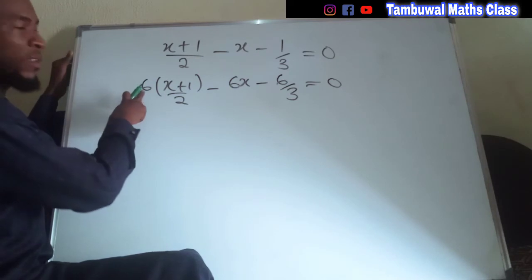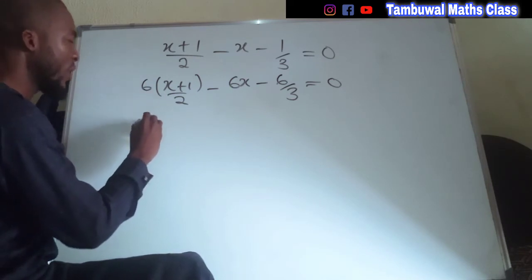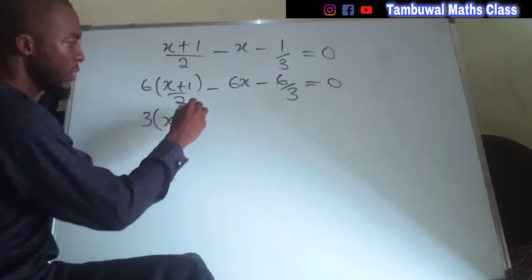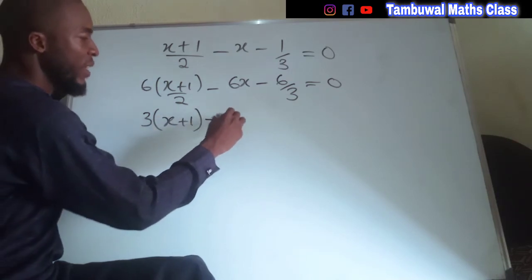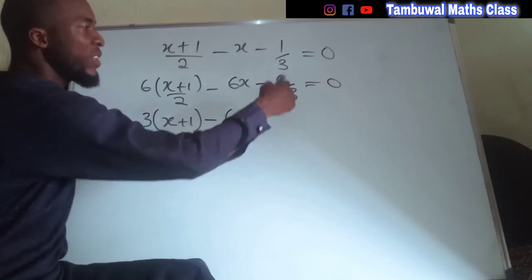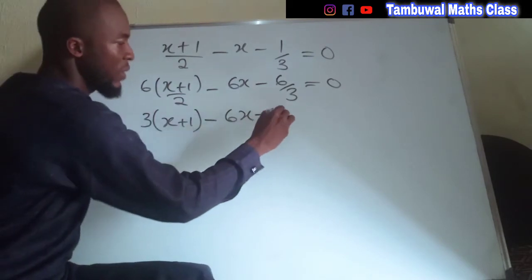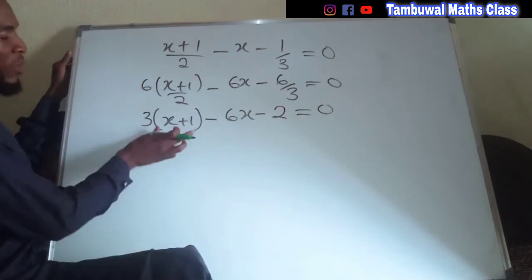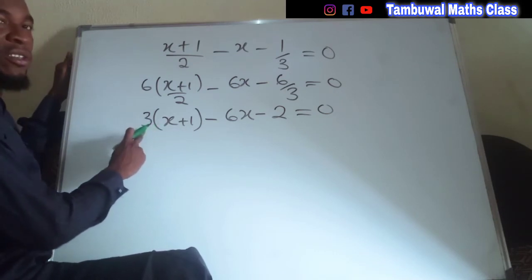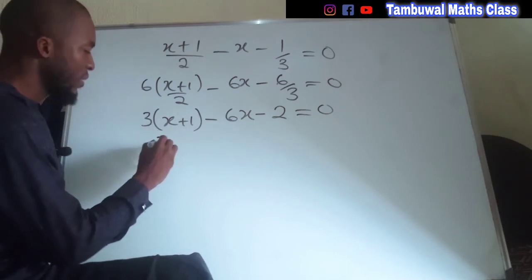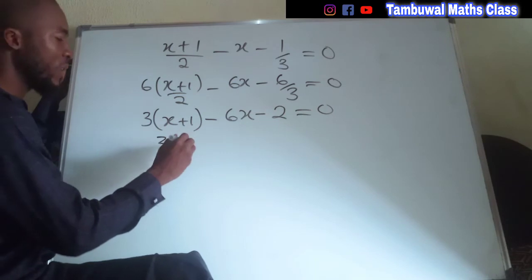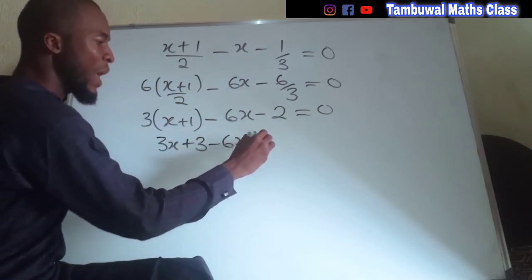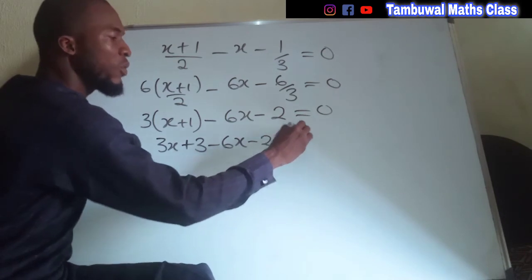Two can go into six three times, so we have three times (x plus 1). Three can go into six two times, so we have two times the expression in the bracket. The whole of this equals zero. We expand the bracket: 3 times x is 3x, 3 times 1 is 3, minus 6x, minus 2, and this equals zero.